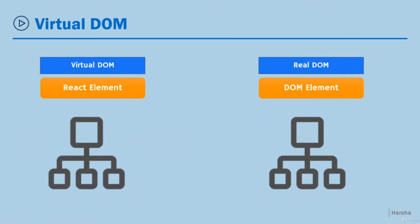For example, in a component with four text boxes, if you update the state of only the first text box, React updates only that specific text box value in the real DOM instead of re-rendering all four values. This makes React work faster than expected. A virtual DOM is a simple JavaScript object that reflects the real DOM, and every time you update the virtual DOM, the changes are automatically effected in the real DOM by React internally — but it never overwrites the complete DOM at any point.